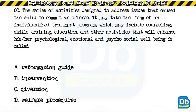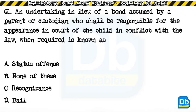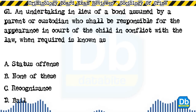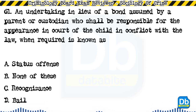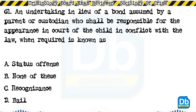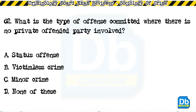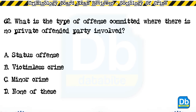The answer is B, intervention. Question 61: An undertaking in lieu of a bond assumed by a parent or custodian who shall be responsible for the appearance in court of the child in conflict with the law when required: a) status offense, b) none of these, c) recognizance, d) bail. The answer is C, recognizance. Question 62: What is the type of offense committed where there is no private offended party involved? a) status offense, b) victimless crime, c) minor crime, d) none of these. The answer is B, victimless crime.